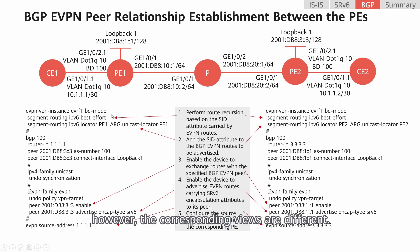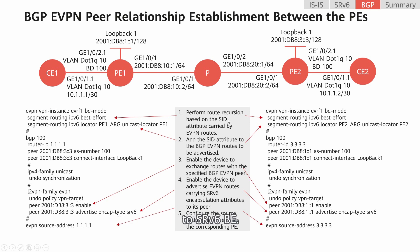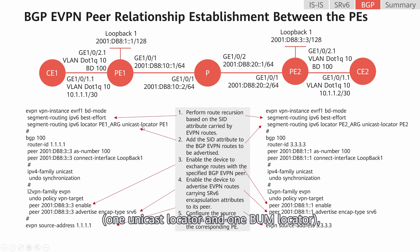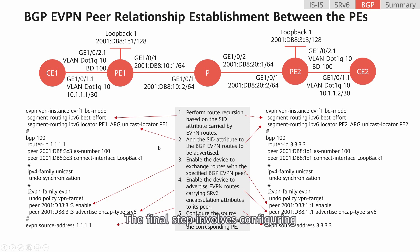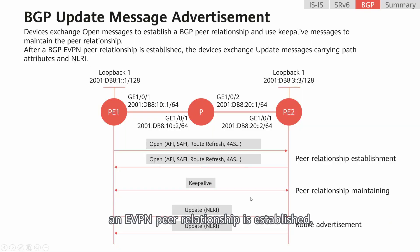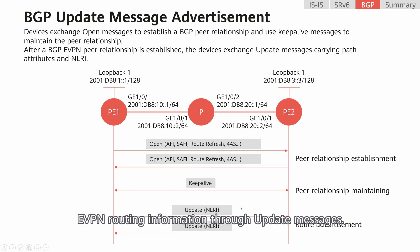However, the corresponding views are different. In this example, we first need to perform route recursion to SRV6BE, then configure the device to add the SID attribute to the BGP-EVPN routes to be advertised. Because the EVPN-VPLS scenario involves two locators — one unicast locator and one BUM locator — we need to specify two locators here. The final step involves configuring an EVPN source address for the corresponding PE. After the preceding configuration is complete, an EVPN peer relationship is established, enabling the PEs to exchange EVPN routing information through update messages.